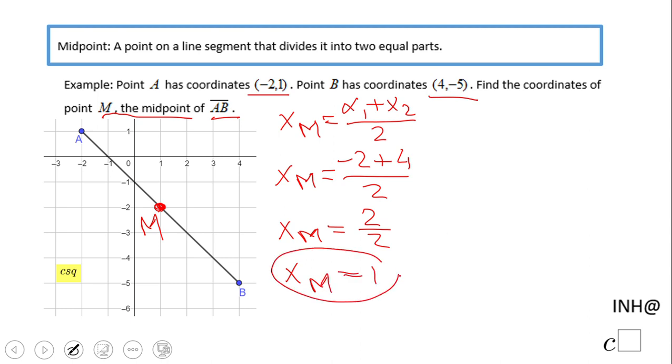If you notice, the x-coordinate is 1. What about the y-coordinate? The y-coordinate is very similar. Y sub m, the y-coordinate of the midpoint, is the average or the arithmetic mean of the y-coordinates.